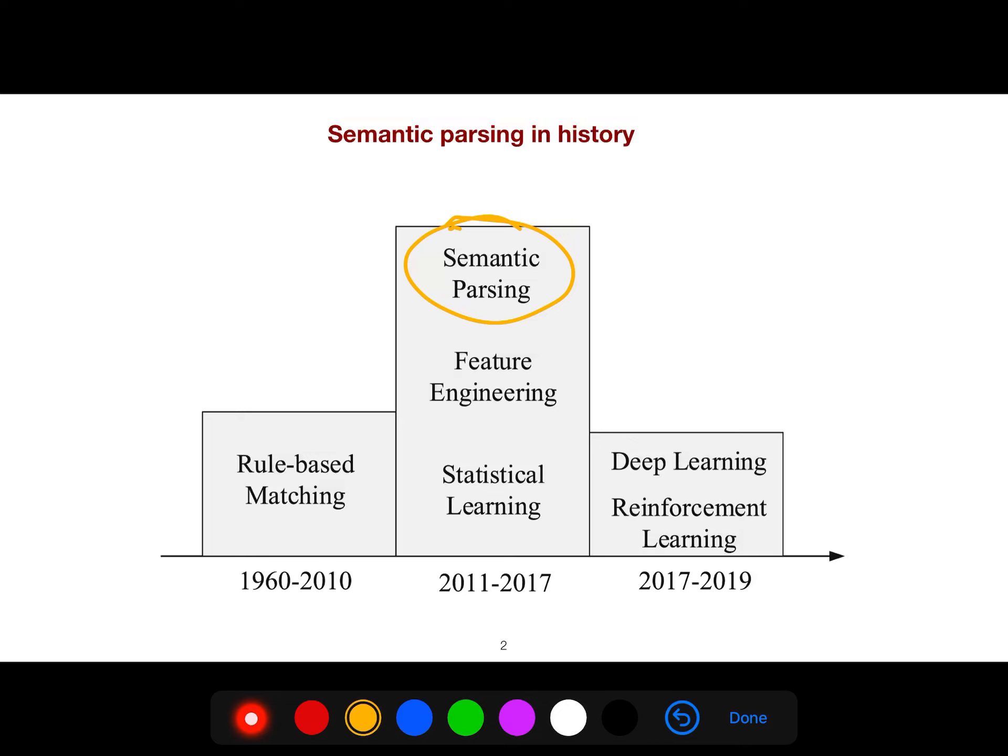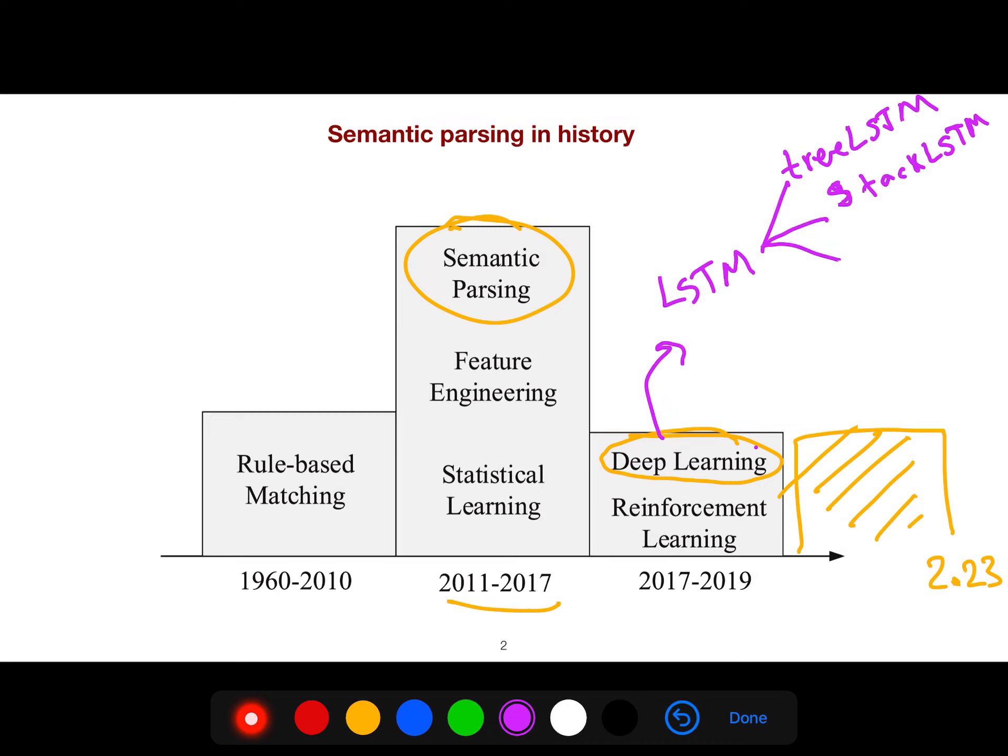Semantic parsing nowadays is becoming more popular in 2023 because we have new tools from deep learning. For example, beautiful variants of LSTM like the tree LSTM of Professor Christopher D. Manning, and stack LSTM like the people in DeepMind, and many other variants of LSTM.